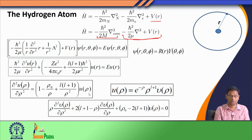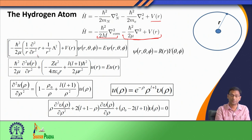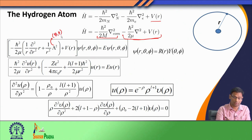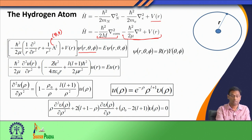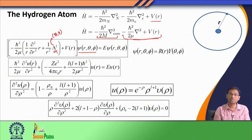We started with this Hamiltonian and separated the first term from the second and third terms, looking at the internal motion of the system. We wrote down the Schrödinger equation where the Laplacian is expressed in spherical coordinates, where r is the radial part and lambda squared — the Legendrian function — depends on theta and phi, the two angular coordinates of our system. This constitutes the Hamiltonian for the kinetic energy part plus the potential energy.